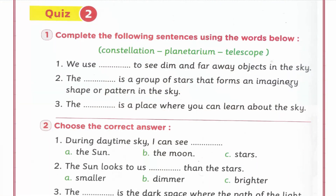Question: Complete the following sentences using the words below. Constellation - كوكبة - هي مجموعة من النجوم. Planetarium - القبة السماوية - اللي بنشوف فيها عن كل الobjects اللي موجودة في الspace. Telescope - ده الأداة اللي بيستخدمها الastronomers عشان يتعرفوا على الobjects اللي موجودة في الspace.